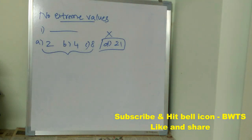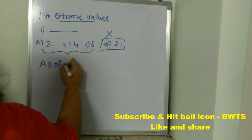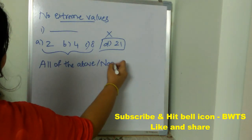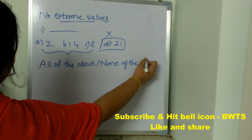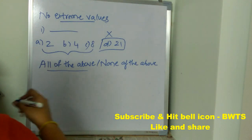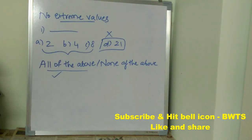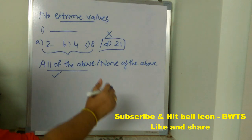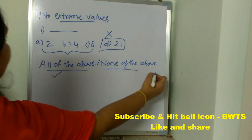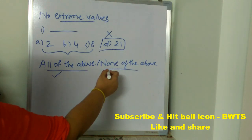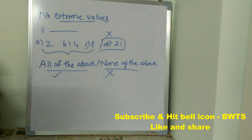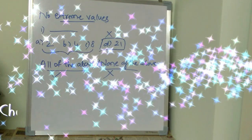The next cheat code is 'All of the Above / None of the Above.' When you have 'all of the above' as one of the options and you don't know the correct answer, there are high chances that 'all of the above' is the correct answer, so you can happily go for it. However, if you find 'none of the above' as one of the options and you don't know the correct answer, don't go for it — there are very low probabilities of 'none of the above' being correct. Always go for 'all of the above' and never go for 'none of the above.'